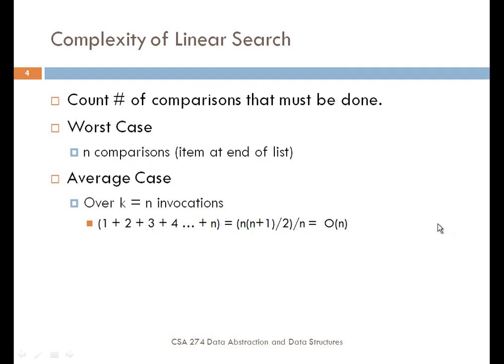The complexity of a linear search is basically big O of n. If you're counting the number of comparisons, the worst case would occur when the item is at the end of the list. The average case, taken over invocations, would be finding it in the first position, second time in the second position, and so forth up to n. The total complexity divided by n gives you a big O(n) algorithm for finding elements in an array when using linear search.